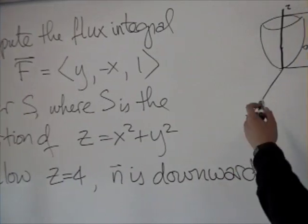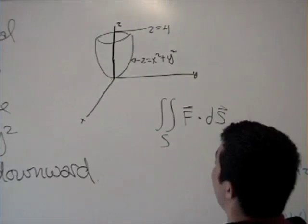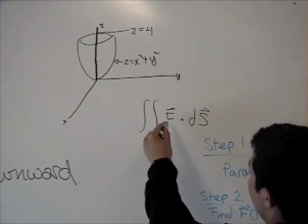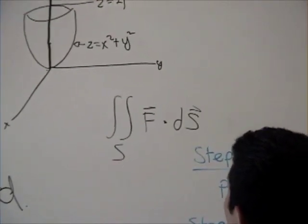We can picture this as a paraboloid that is capped at z = 4. By setting our flux integral, we have the flux dotted with the surface.